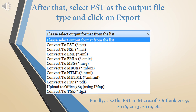After previewing, select PST as the output file type and click Export. Finally, use the exported PST file in Microsoft Outlook 2019, 2016, 2013, 2010, etc.